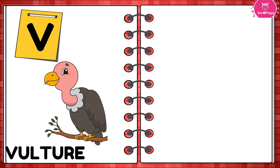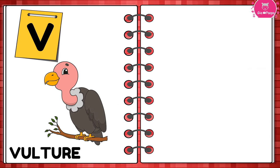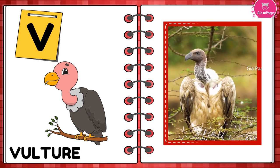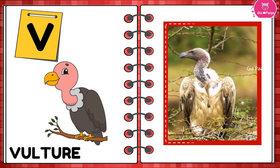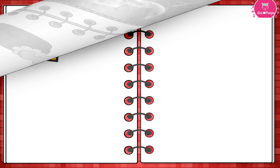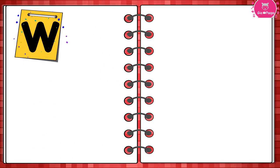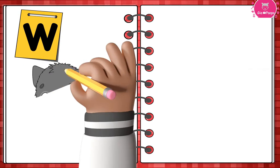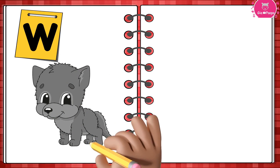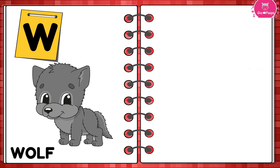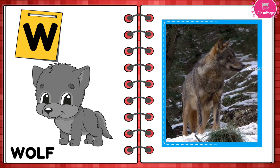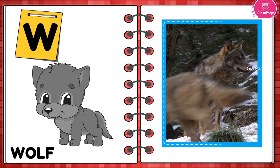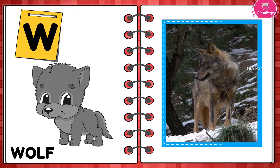Unicorn. V is for Vulture. Vulture. W is for Wolf. Wolf. W is for Wolf. Wolf.